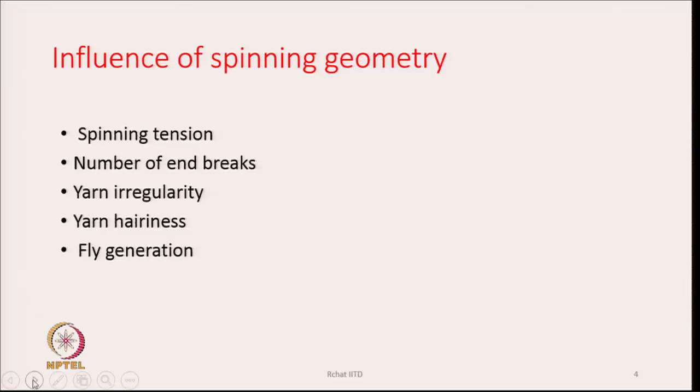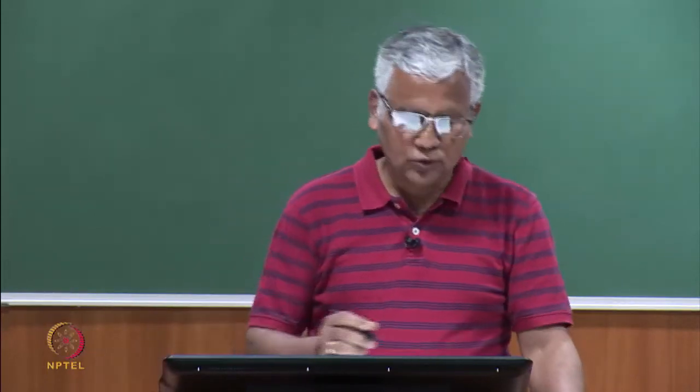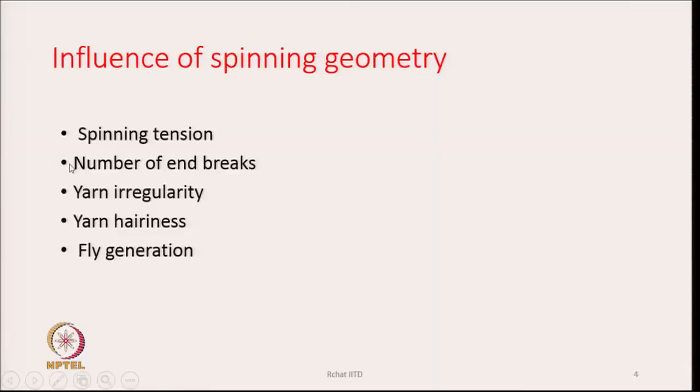Spinning geometry influences spinning tension, the number of end breaks, and the number of times the thread is going to break. It also affects the irregularity of the yarn — that is, mass irregularity. It can affect the hairiness of the yarn and can also affect the generation of fly. So many factors are affected by the spinning geometry.